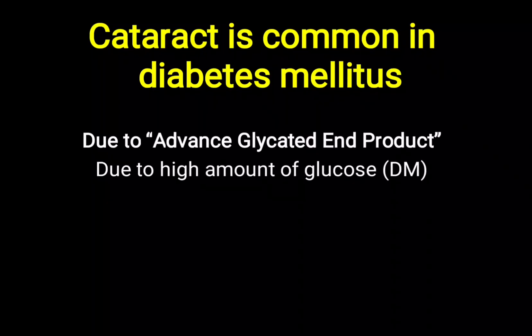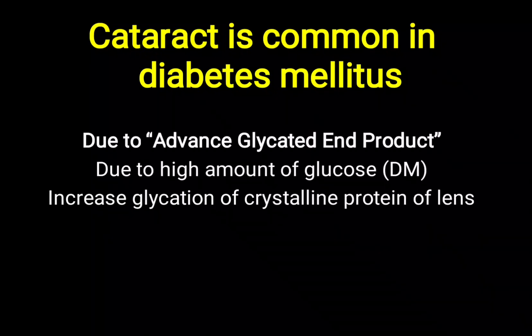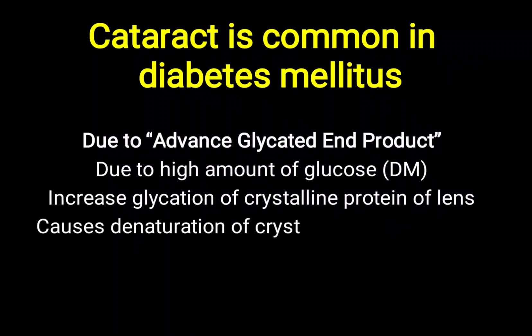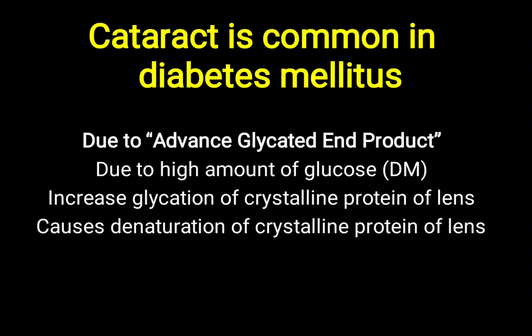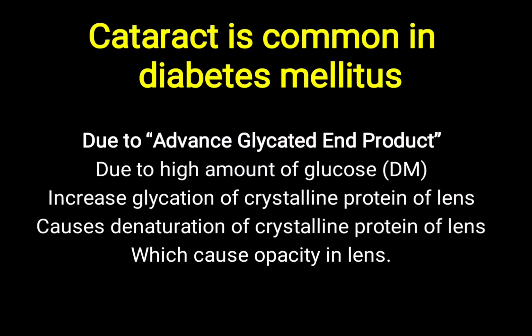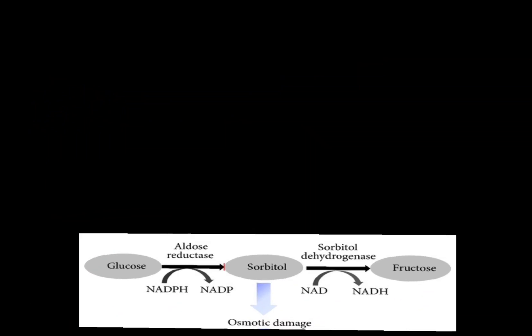Due to high glucose in diabetes mellitus, increased non-enzymatic glycation occurs particularly over the crystalline protein of the lens. This attachment of glucose leads to denaturation of the crystalline protein present in the lens. Due to denaturation, the protein is precipitated and that causes opacity in the lens. So one reason is the increased glucose level leading to protein denaturation and creating opacity.